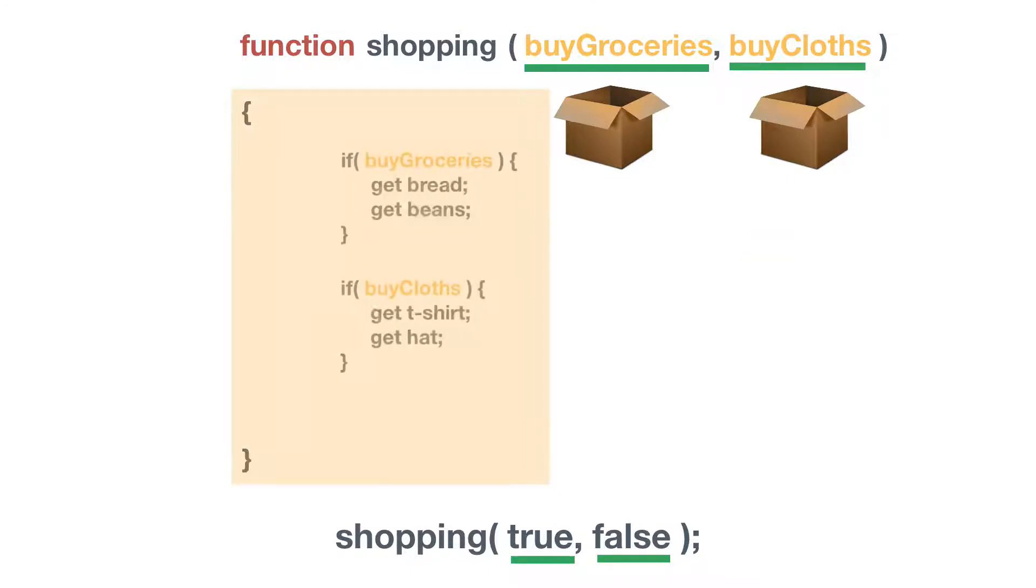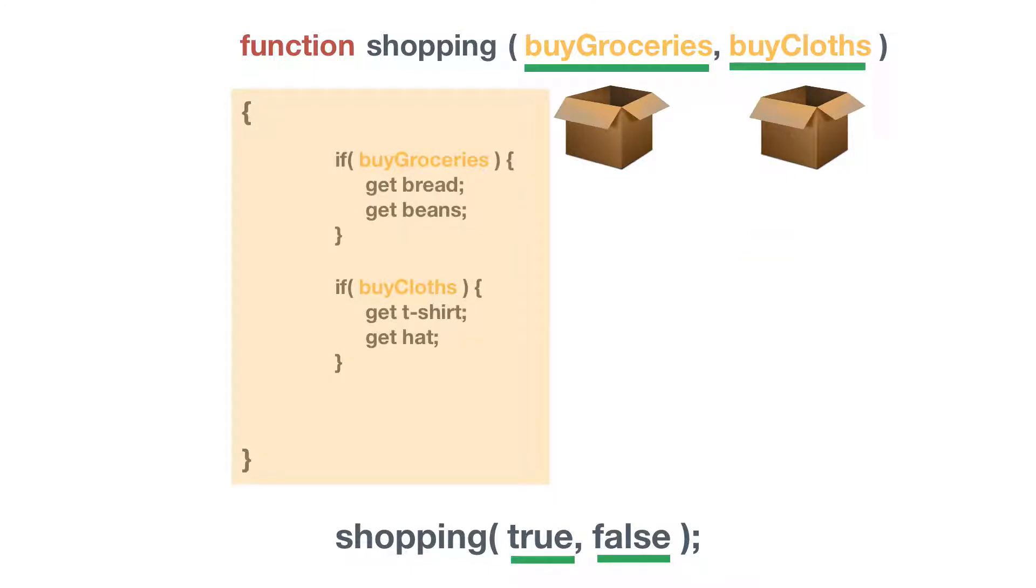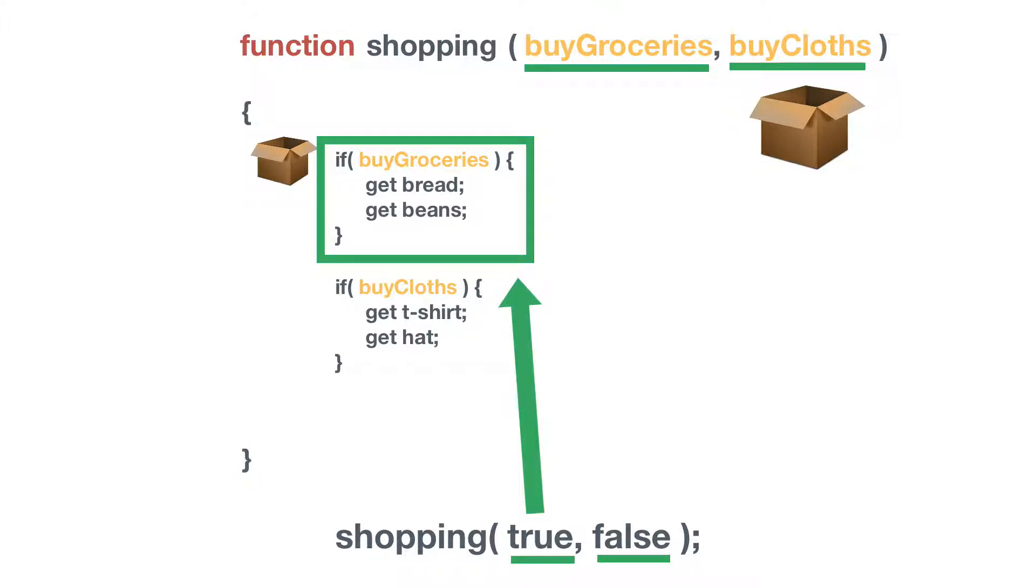And my subroutine now executes and what happens is I start executing and it says do you want to buy groceries? Yes or no. So we have an if statement here. We have a conditional execution context. If we want to buy groceries then we're going to buy these items. Then we move on and we carry on following down.